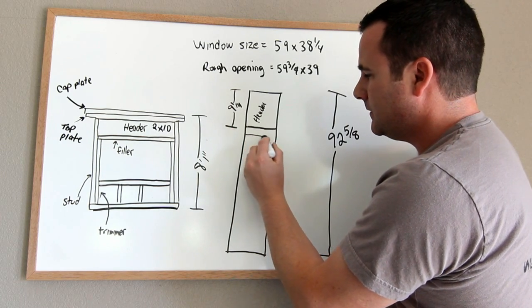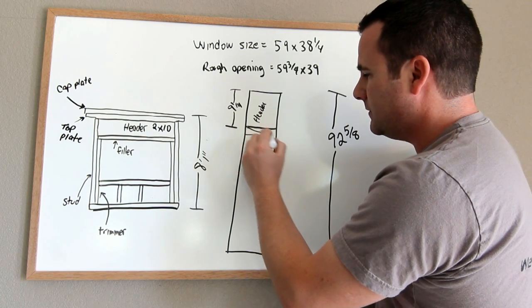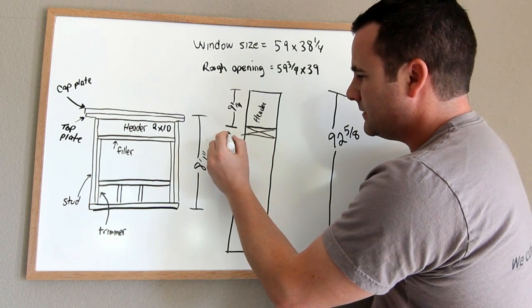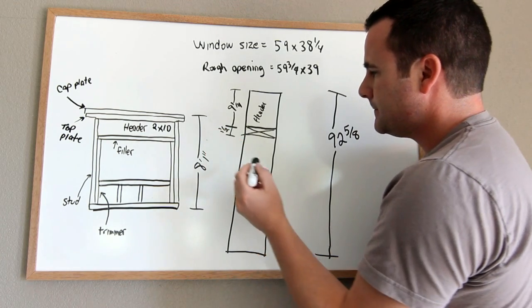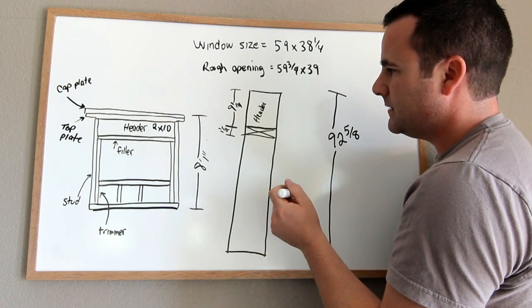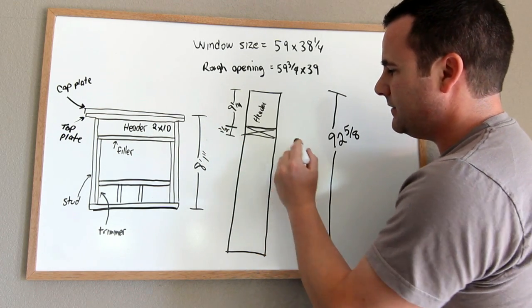Then your filler is another inch and a half that goes right there. So 9 and a quarter, that's 10 and a quarter, 10 and 3 quarters.